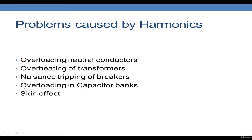Harmonics can also cause nuisance tripping of breakers. All circuits contain capacitance and inductance, which have one or more resonant frequencies. When a resonant frequency corresponds to a harmonic frequency produced by a nonlinear load, harmonic resonance can occur. Depending on whether the circuit is a series or parallel circuit, this results in voltage amplification or current multiplication, causing nuisance tripping and damage in the power system.